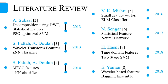In 2016, VK Mishra developed a computationally efficient system that uses a small feature vector fed to an extreme learning machine classifier. Statistical features with a neural network were used by N. Sanger in 2017. And most recently, two-stage cascaded SVM and bagging ensemble classifiers were used to achieve better accuracies.